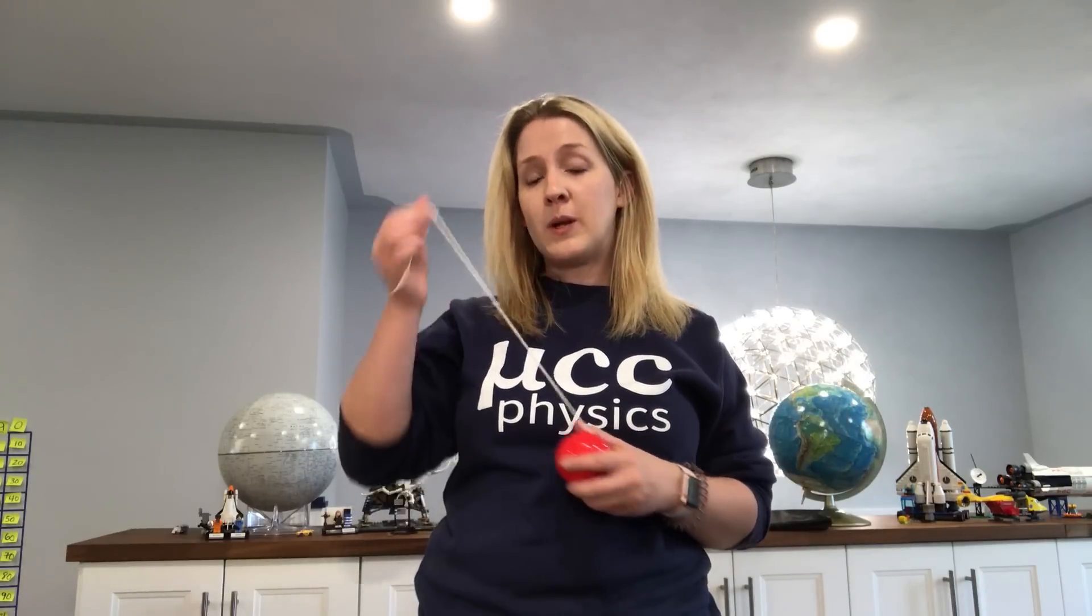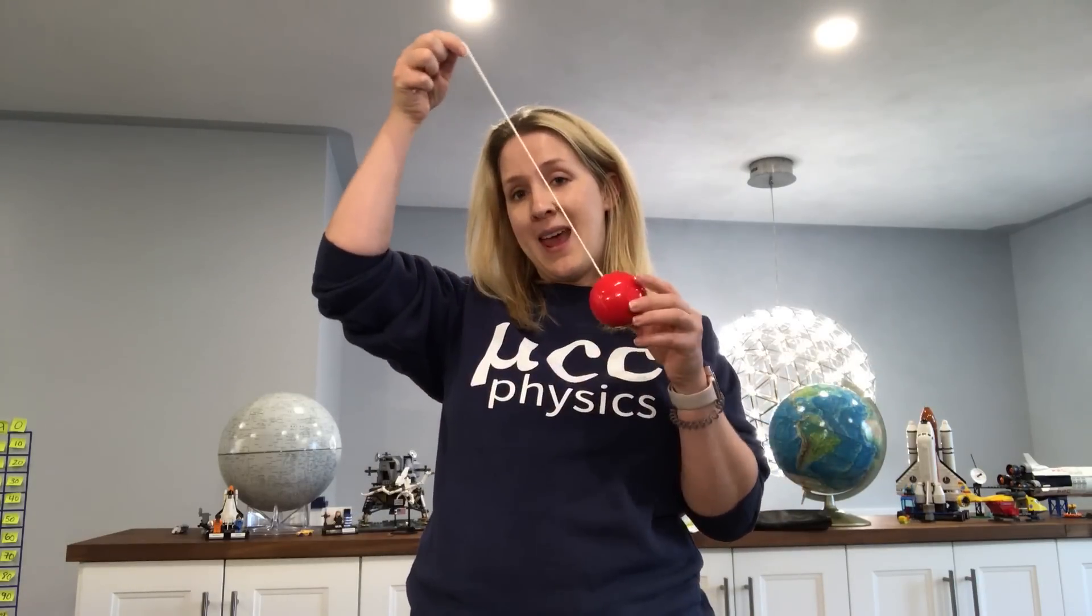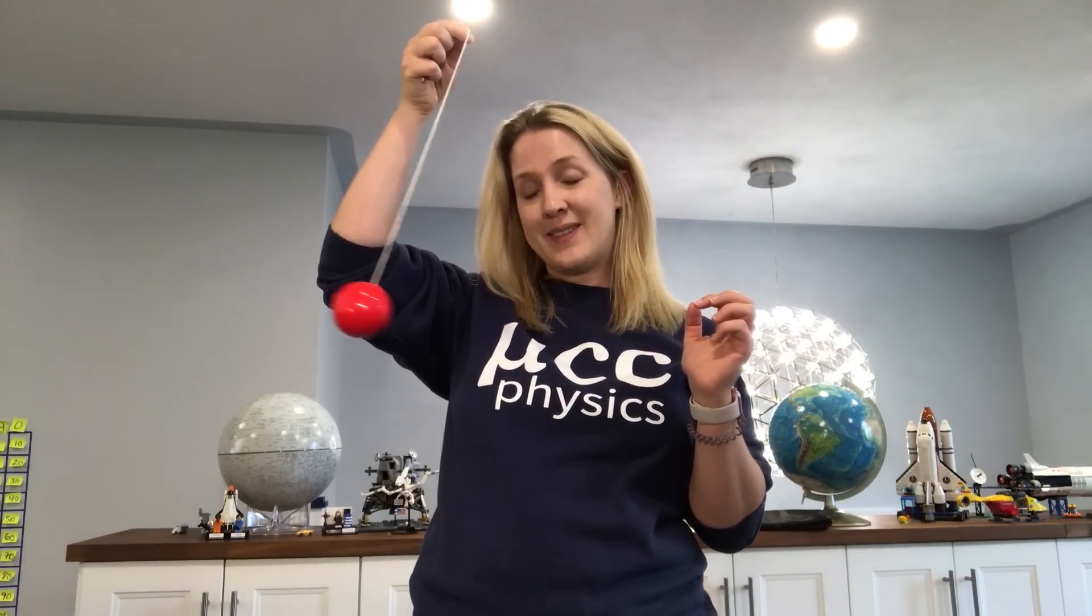After students have gone through and determined that it's just the length of the pendulum that affects its period, students can then design a clock that keeps time for 60 seconds. The way that I do this is I have one student pull back the pendulum and then start counting 60 cycles while another student is timing on a stopwatch. When the student who's counting up to 60 says stop, so will the student with the stopwatch and we'll see how accurate they are.